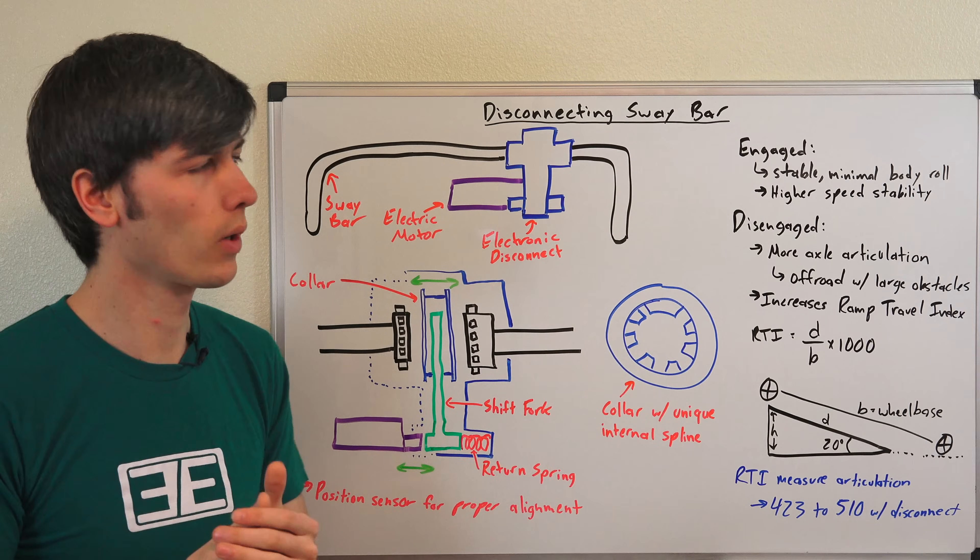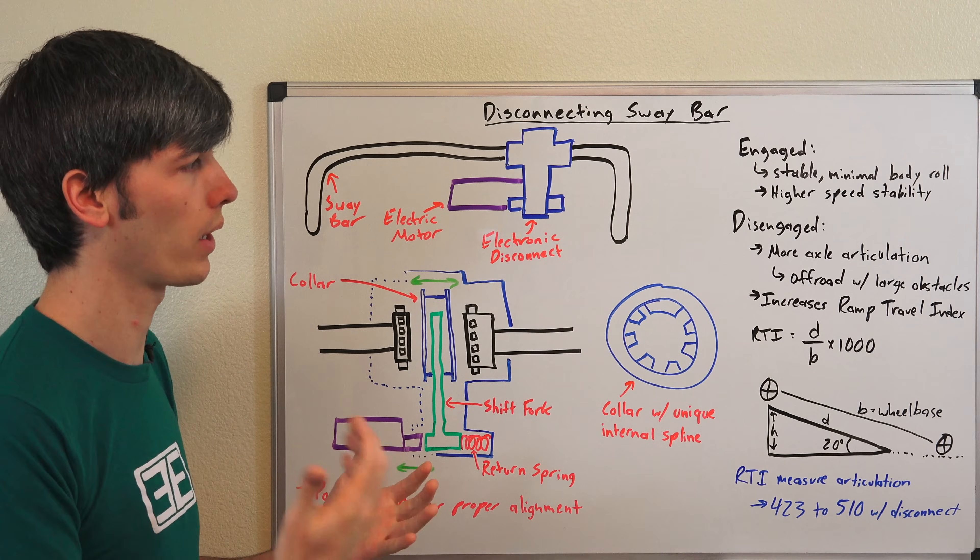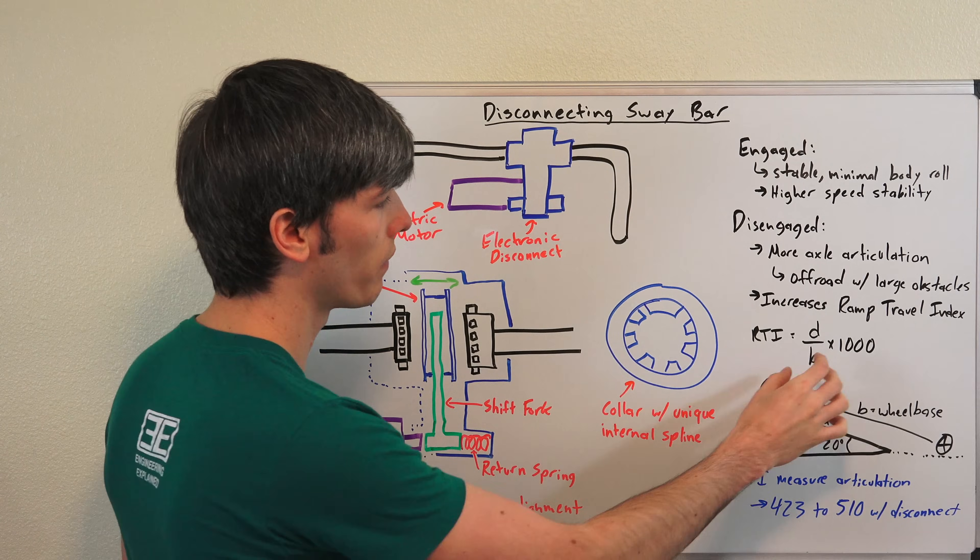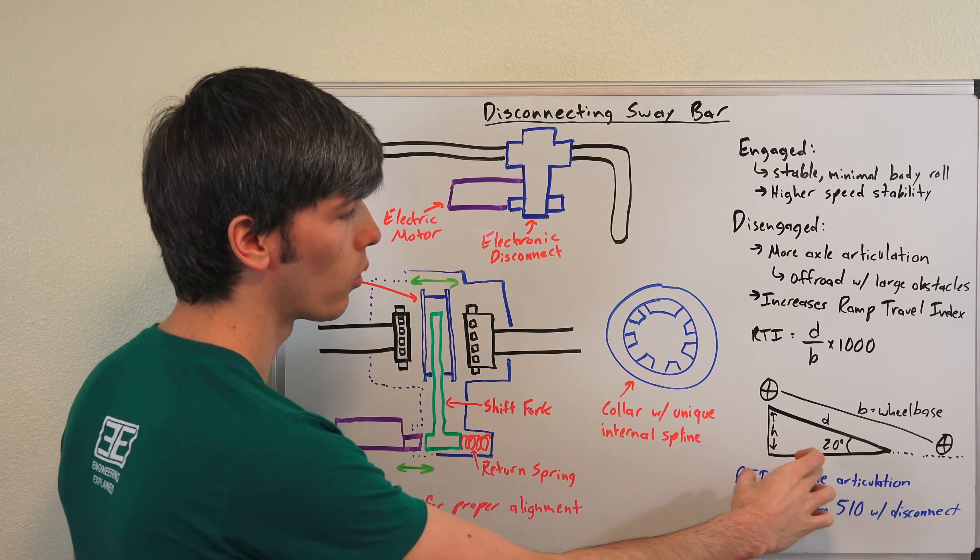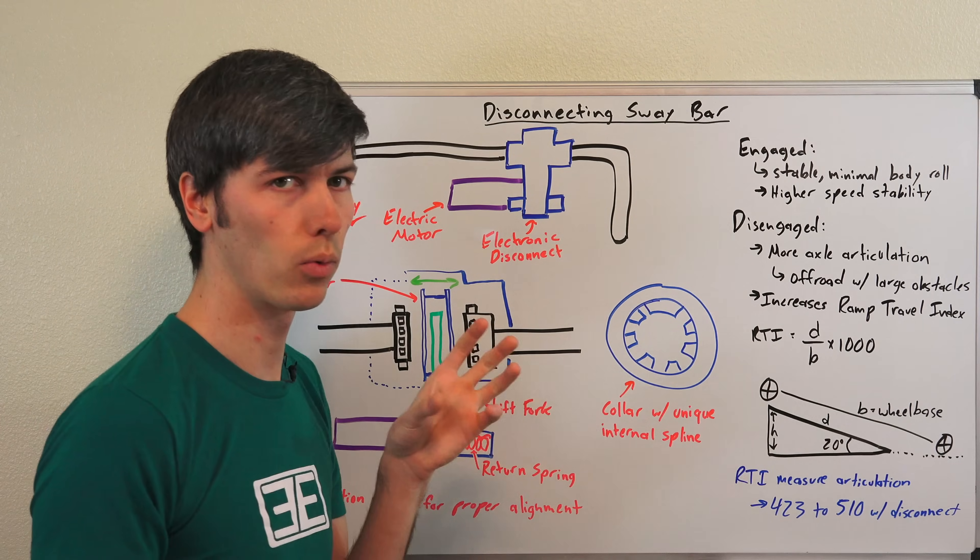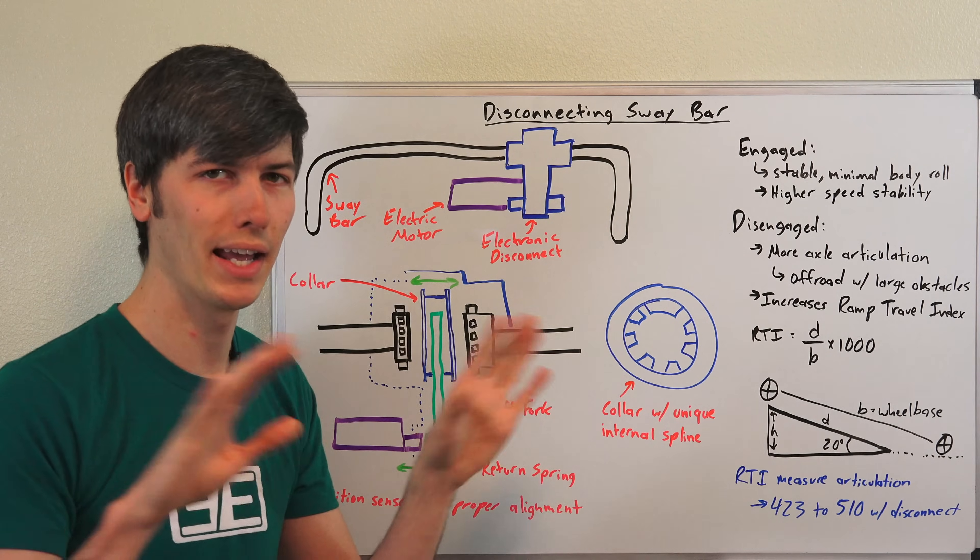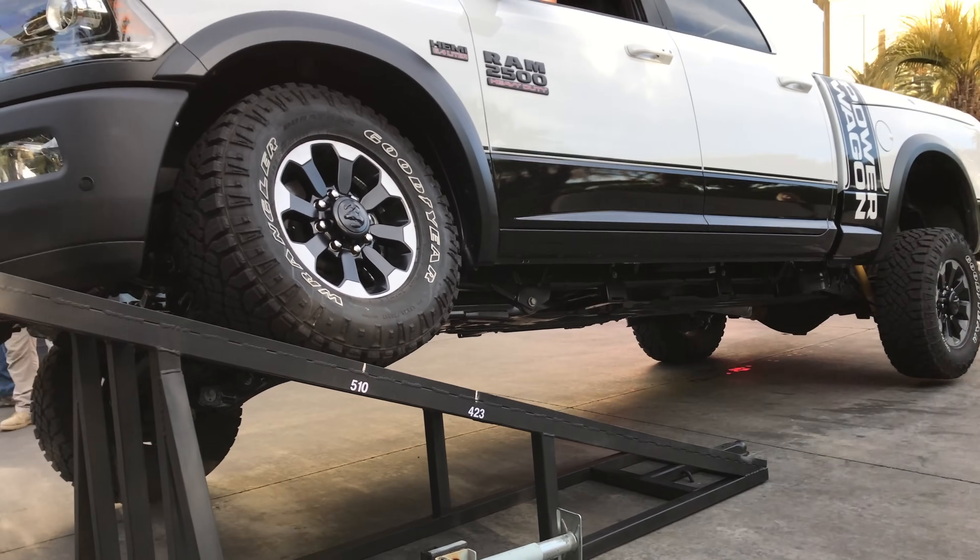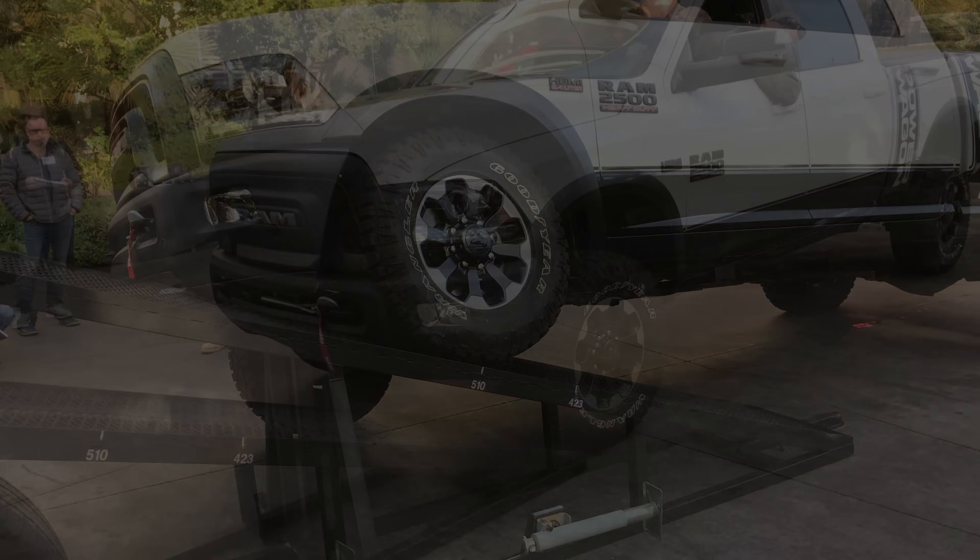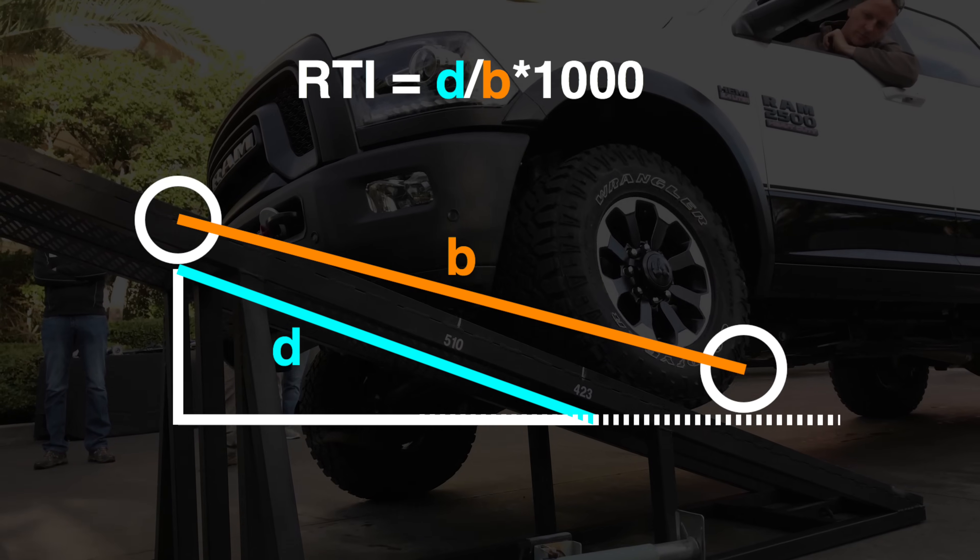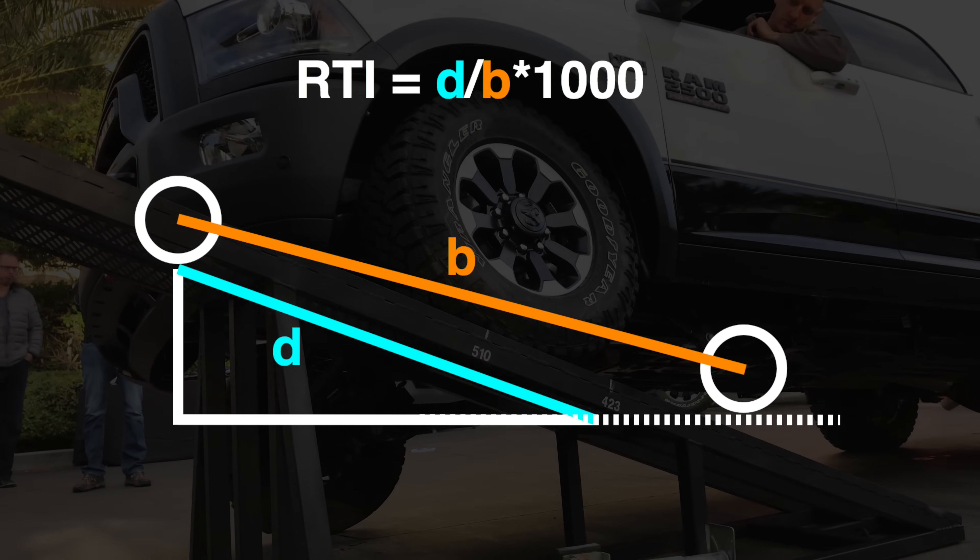The technical way that this is described is that it increases its ramp travel index. And so the RTI is a ratio of the distance which you travel up a ramp, traditionally a 20-degree ramp, before that rear wheel lifts up in the air, before any wheel lifts up in the air. And typically it's going to be the wheel behind the wheel which is going up the ramp. So as it's going up the ramp, you're taking the ratio: the distance that it travels up that ramp divided by the vehicle's wheelbase, multiplied by a thousand.